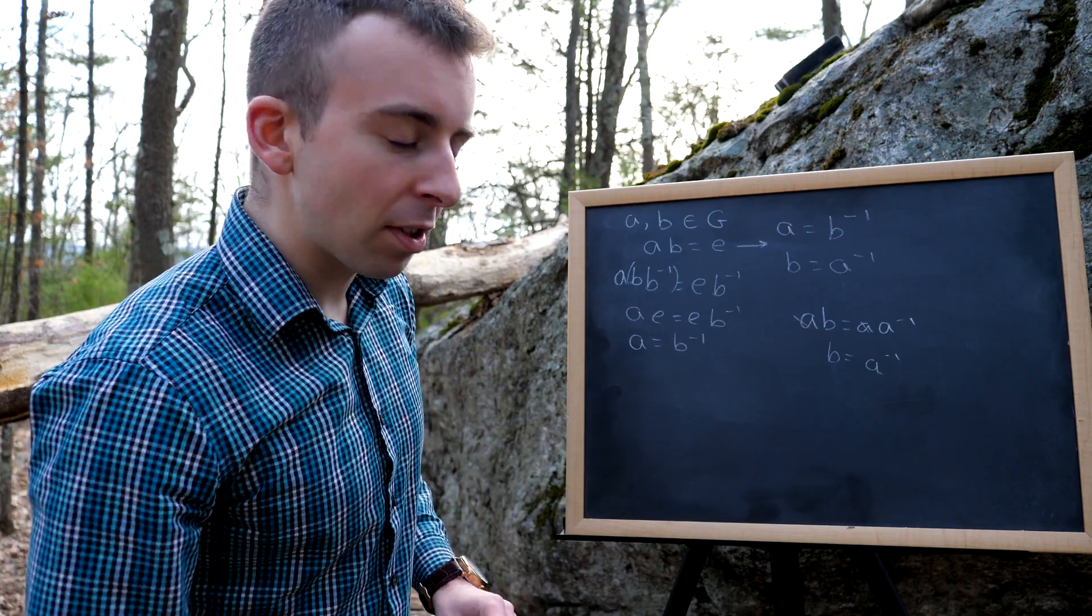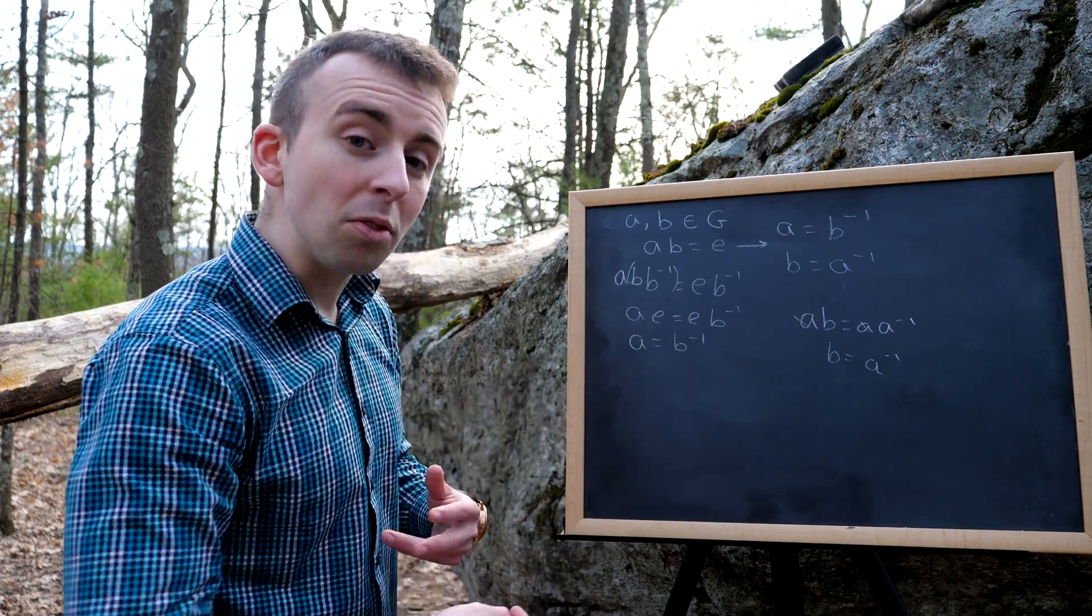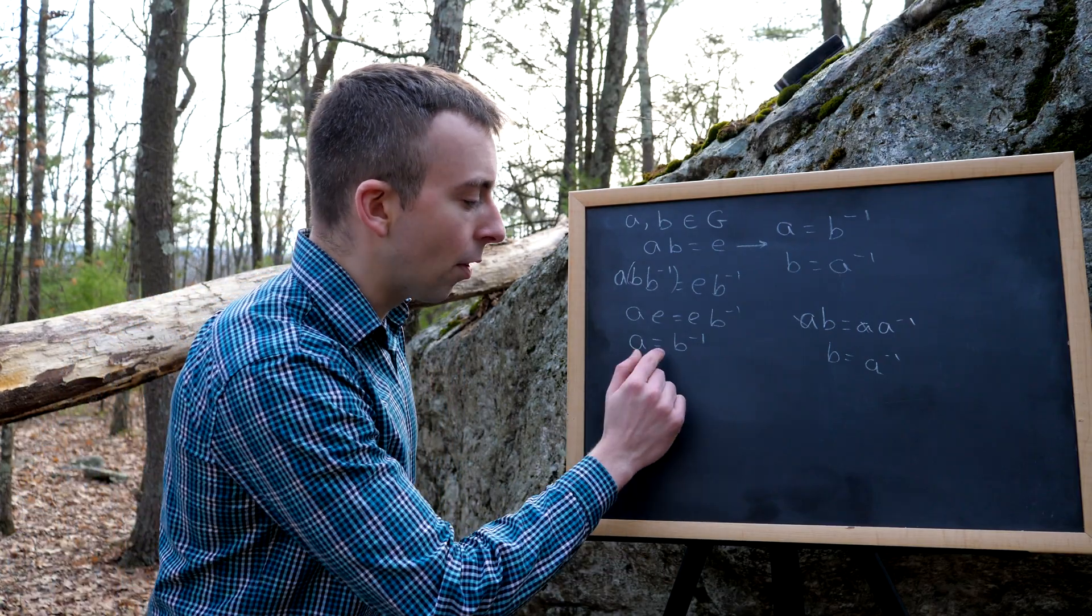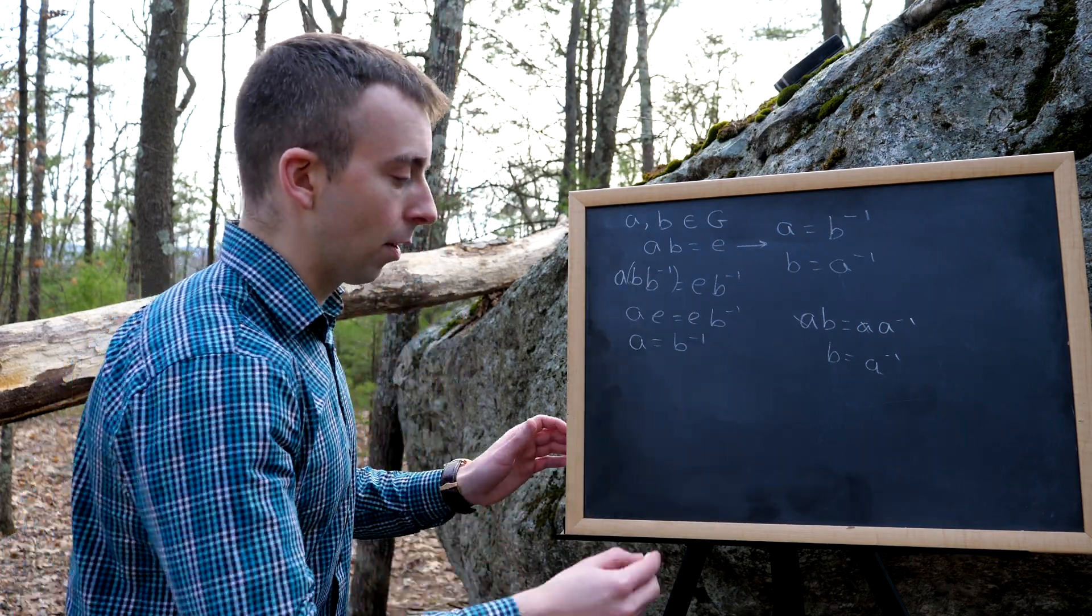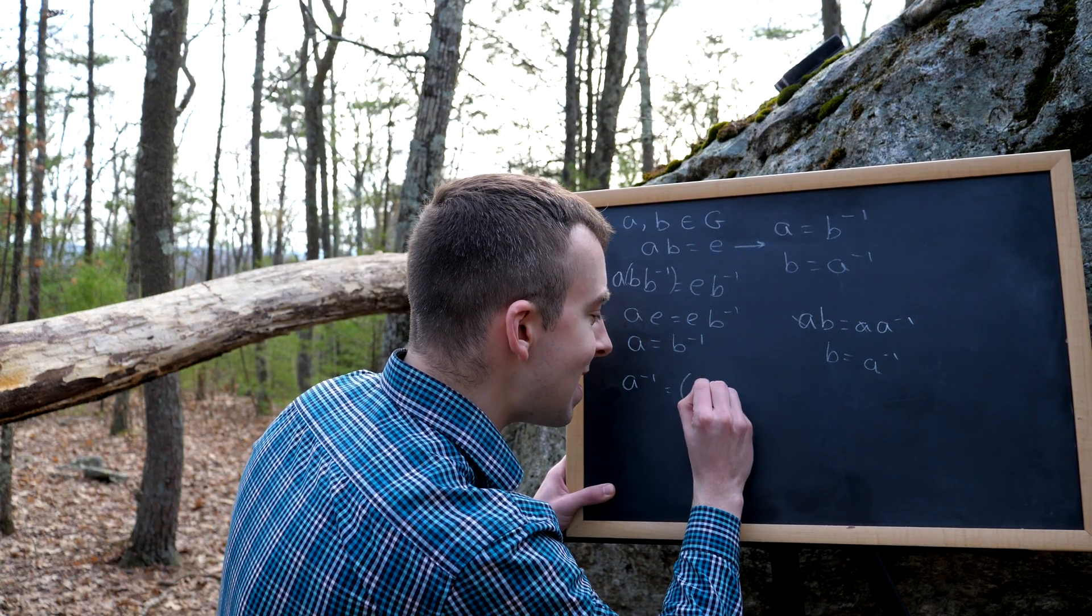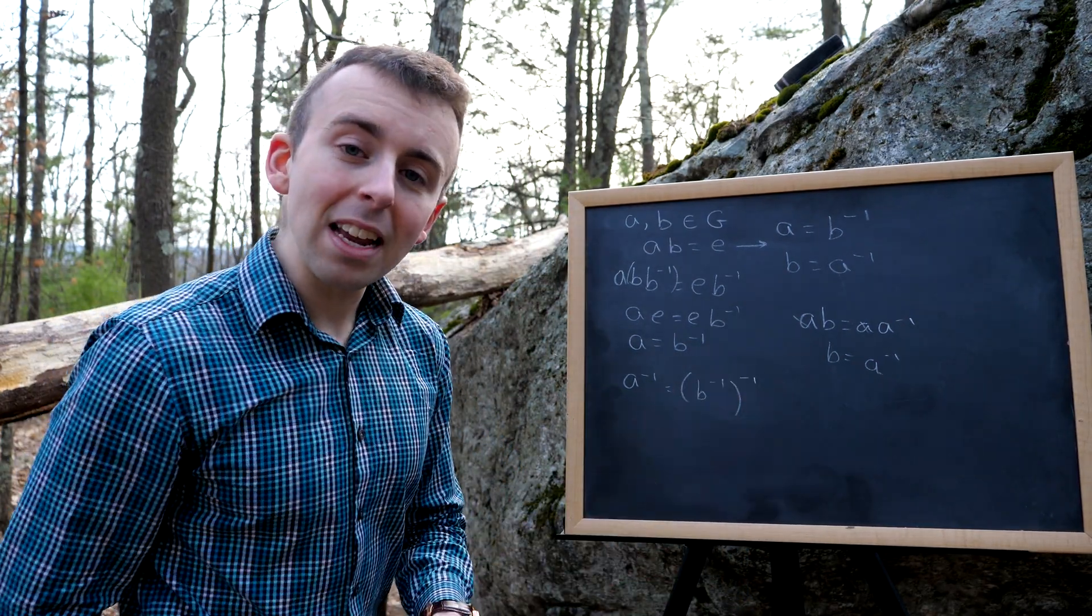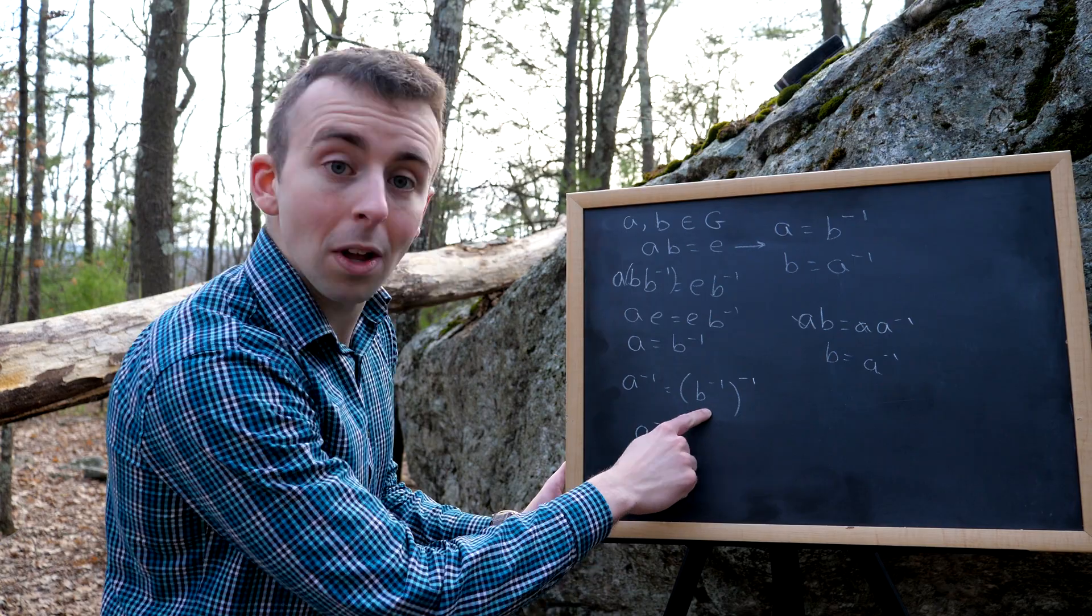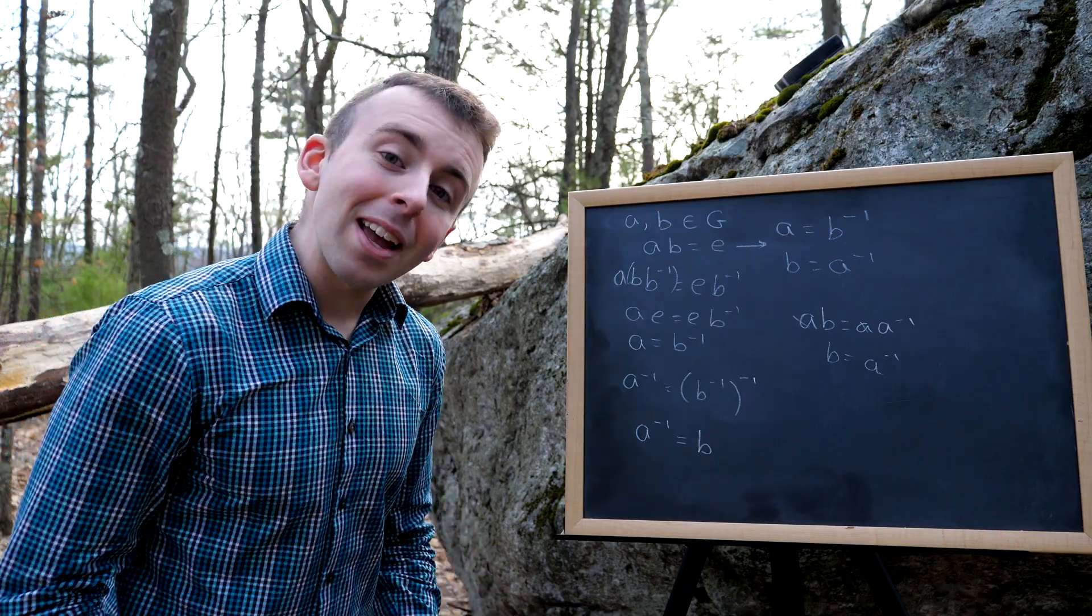We could take either of these proofs where we stop at the halfway point. Say we stop here: A is the inverse of B. Instead of using the same technique again to get that B is the inverse of A, we could invert both sides of this equation. Since inverses are unique, these equal elements have to have the same inverses. So we could invert both sides of the equation and have that A inverse equals B inverse inverse. But then, in a previous lesson, we proved that the inverse of an inverse is the original element. And so we could then conclude that A inverse equals B. The inverse of B inverse has to be B. And so then we would have that B is the inverse of A. The proof would be over.